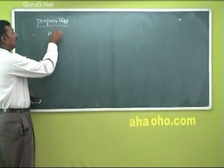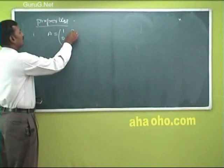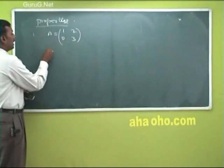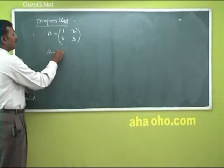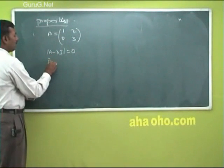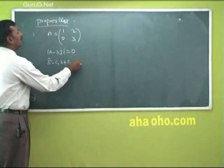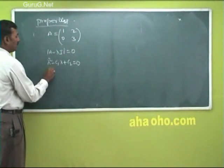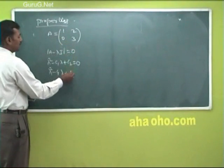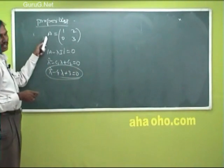For example, suppose A equals the matrix [1, 2; 0, 1; 2, 3] — a 2 by 2 matrix. We can write the characteristic equation as determinant of (A minus lambda I) equal to 0, giving lambda squared minus C1 lambda plus C2 equal to 0. Here C1 is the sum of the diagonal elements, so 4, and C2 is the determinant, so 3. So the characteristic equation is lambda squared minus 4 lambda plus 3 equal to 0.